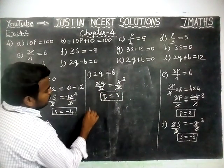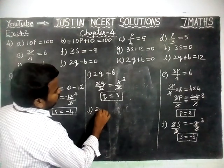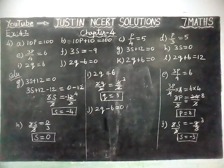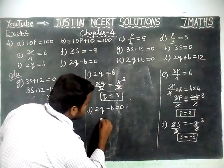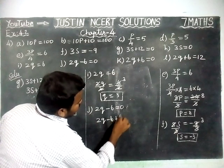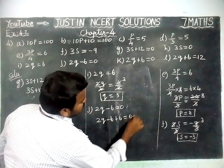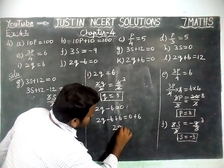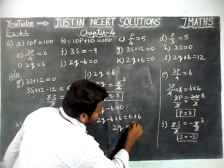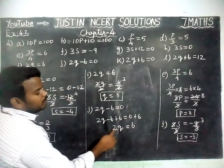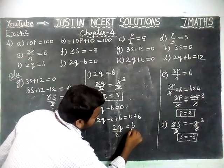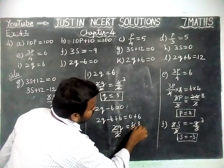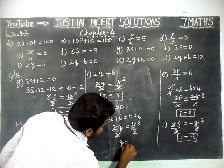Then option J: 2Q minus 6 is equal to 0. To cancel this 6, we are going to add 6 on both sides. So, 2Q minus 6 plus 6 is equal to 0 plus 6. Minus 6 plus 6 gets cancelled. So, 2Q is equal to 0 plus 6 equal to 6. Now we have to divide 2 on both sides. 2 gets cancelled. 1 two is 2, 3 twos are 6. So, value of Q is equal to 3.